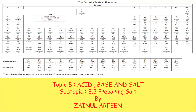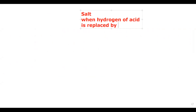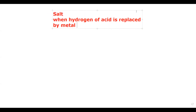The main topic is acid, base, and salt, and the subtopic is about the preparation of salts. The definition of a salt: when the hydrogen of an acid is replaced by a metal, we call that a salt. So whenever we have an acid with hydrogen, if that hydrogen is replaced by a metal, we call that a salt.